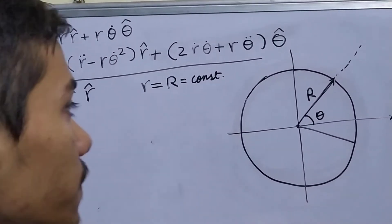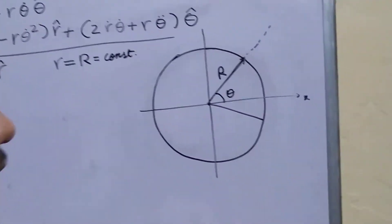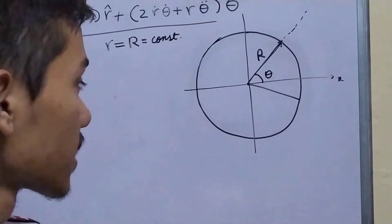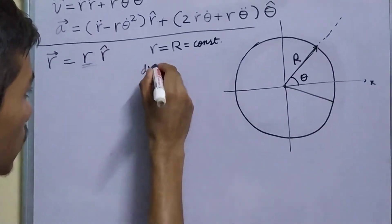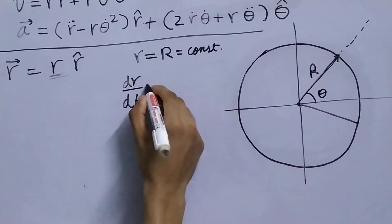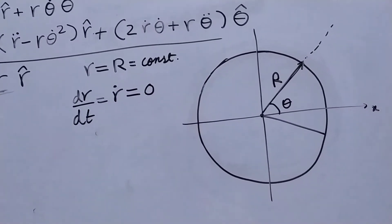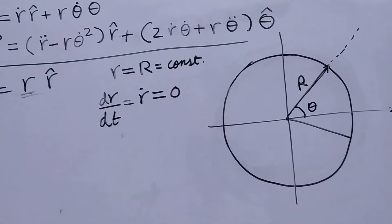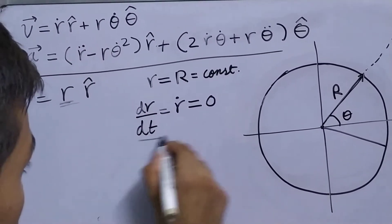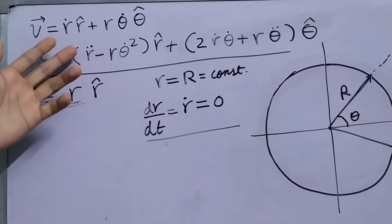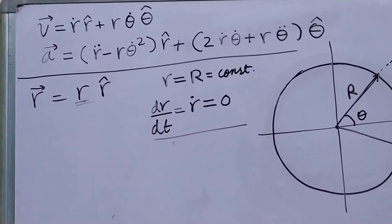By constant we mean that doesn't change with time. No matter how fast your particle is moving, if it's moving on the circle, this distance is guaranteed to stay fixed. So dr/dt — or r-dot — equals zero. Using this result, we will substitute it into the velocity and acceleration formulas and see what we get.